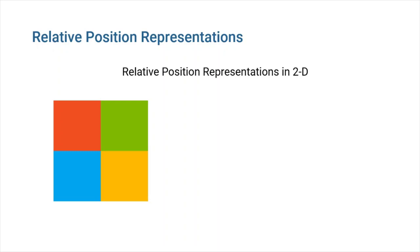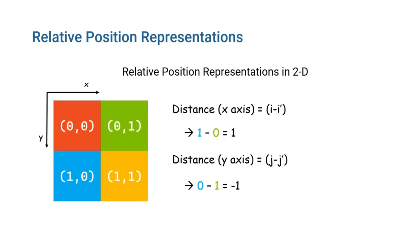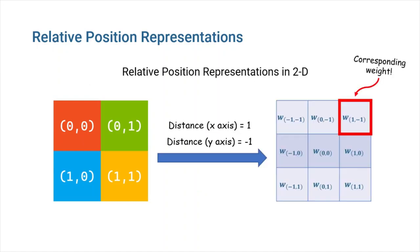Using the same principles, we can bring the relative position representation to two-dimensional space and use it on images. Consider this 2 pixel by 2 pixel image. Following the logic in 1D relative position encodings, we should make a 3 by 3 table to store our weights. In order to find the correct weight from the table, we should calculate distance between two pixels, both horizontally and vertically. For example, distance between green and blue square would be 1 in x-axis and minus 1 in y-axis. Then, using the table, we can find the corresponding weights.